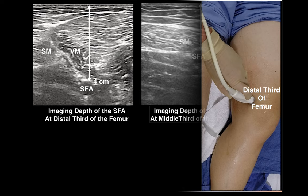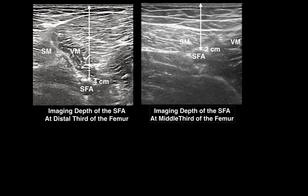This panel illustrates the depth of the SFA at the level of the distal third of the femur on the left compared with its depth at the middle third of the femur on the right. At the distal third of the adductor canal, the artery is passing deep through the adductor hiatus where it becomes the popliteal artery. Thus, paradoxically, the SFA is easier to image at the mid or proximal thigh than it is at the distal third of the femur.